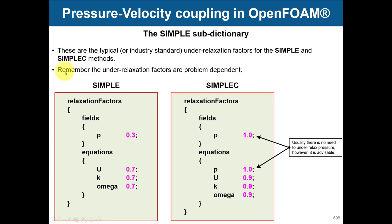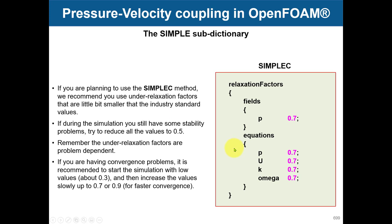SIMPLE and SIMPLEC are used for steady solvers, and in steady solvers it is very important to define the relaxation factors. These two formulations have different requirements. Usually these are the industry standard values, but they are very problem-dependent — you won't always use the same values. When dealing with turbulence modeling, the relaxation factor is often the culprit for divergence, so you may need to reduce it. With SIMPLEC, you can use larger relaxation factors and reach convergence faster with more stability.